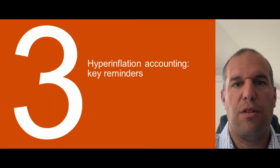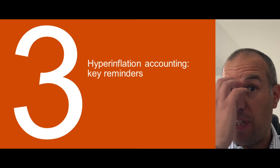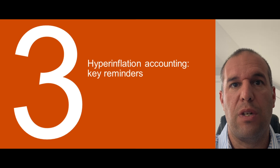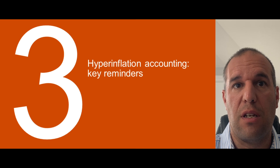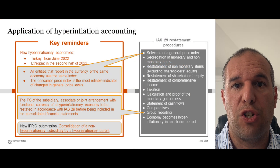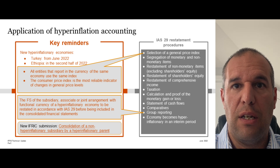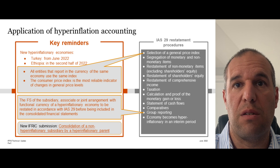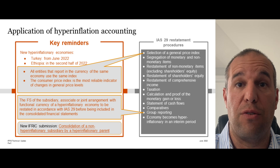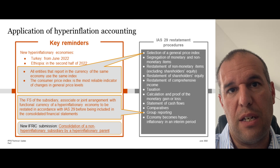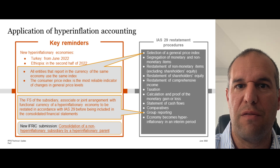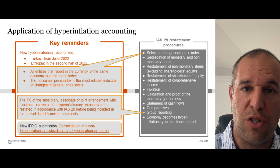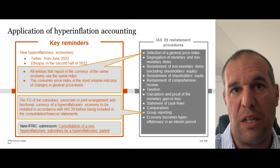In 2022, the list of hyperinflation territories expanded to include, unfortunately, Turkey and Ethiopia. Entities with the Turkish lira as their functional currency should start applying IAS 29 from June 2022 onwards, and for Ethiopia in the second half of 2022. Hyperinflation accounting should be applied as if the economy had always been hyperinflationary, which makes the application of IAS 29 complicated and requires extensive restatement procedures. The first key requirement is the selection of the general price index — all entities reporting in the currency should use the same index. We believe the consumer price index is the most reliable indicator, as it's normally closest to the concept of a general price index required by IAS 29.